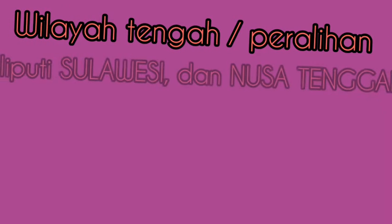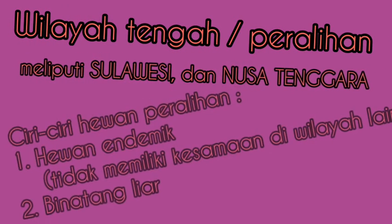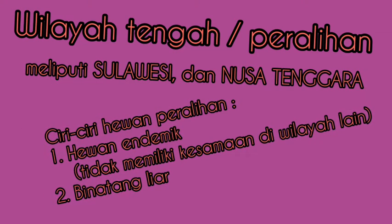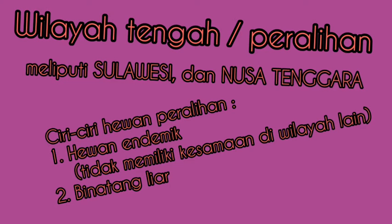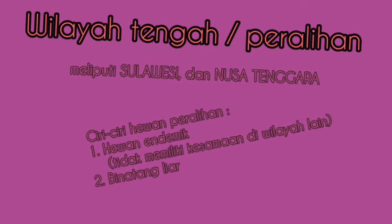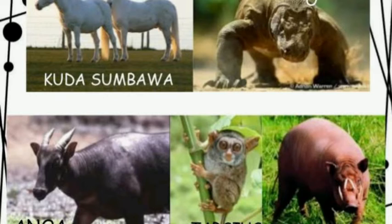Selanjutnya yang kedua, yaitu di wilayah tengah atau peralihan, meliputi Sulawesi dan Nusa Tenggara. Ciri hewannya adalah hewan endemik yang tidak bisa ditemui di wilayah lain. Dan yang kedua, biasanya hewan di wilayah tengah atau peralihan itu adalah hewan-hewan yang liar atau biasa hidup di alam bebas. Hewan-hewan ini tidak akan ditemui di wilayah lain selain di daerah Sulawesi dan Nusa Tenggara.